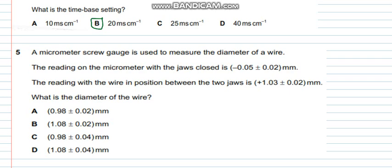Question 5 says a micrometer screw gauge is used to measure the diameter of a wire. The reading on the micrometer with the jaws closed is negative 0.05 plus minus 0.02 mm. The reading with the wire in position between the two jaws is positive 1.03 plus minus 0.02 mm. What is the diameter of the wire? So initially when the jaws were closed the reading was negative, so we need to add this reading in 1.03. So 1.03 would be added with 0.05 and when the reading is added the uncertainties are also added. So plus minus 0.02 and plus minus 0.02. So adding this up would give me 1.08 plus minus 0.04. So this would be D, 1.08 plus minus 0.04 mm.